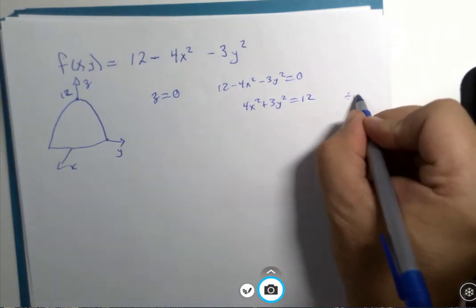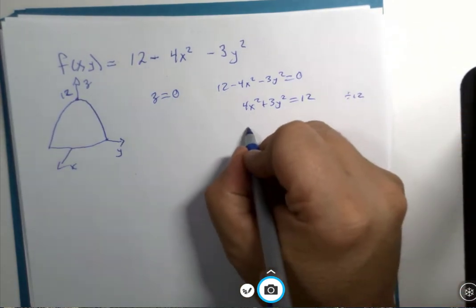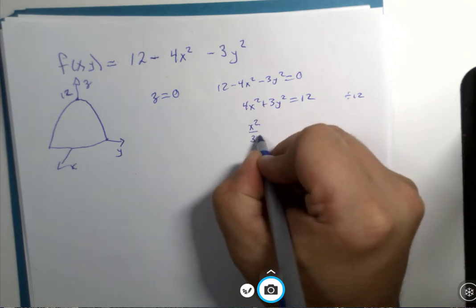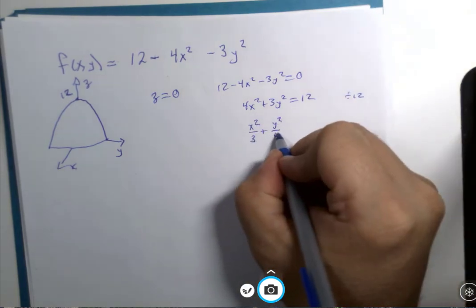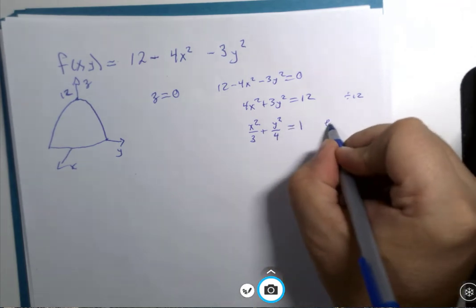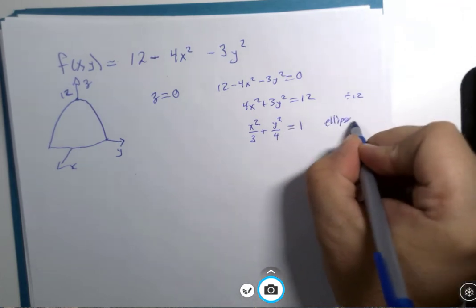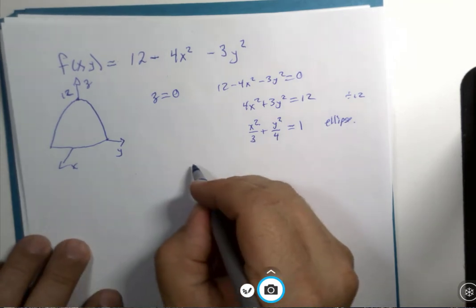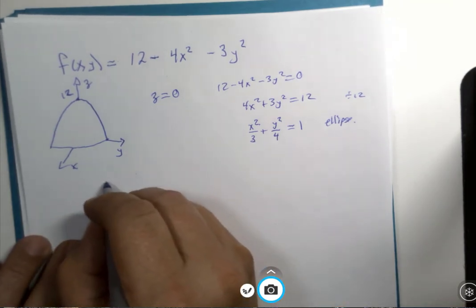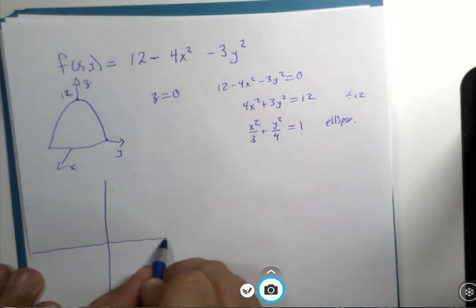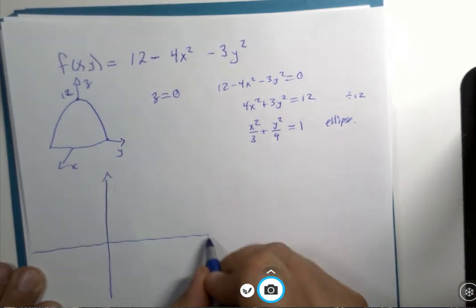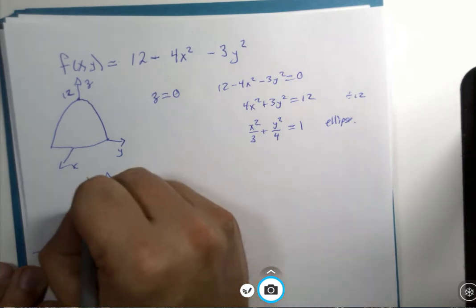Divide by 12 and you get x squared over 3 plus y squared over 4 equals 1. Aha! That's an ellipse.